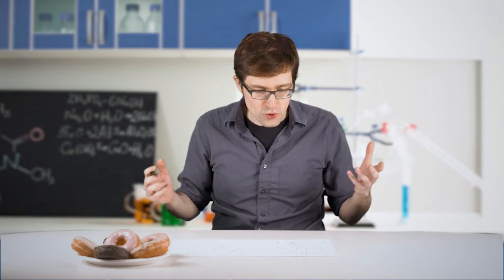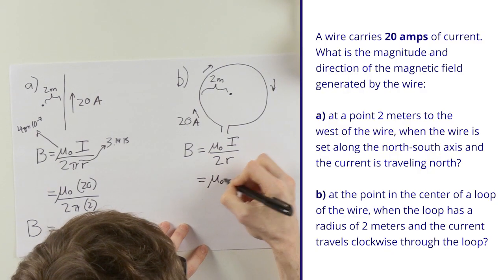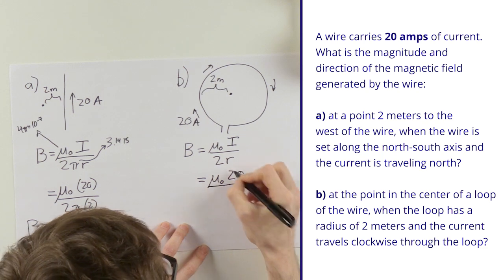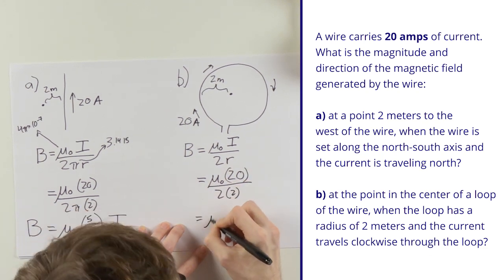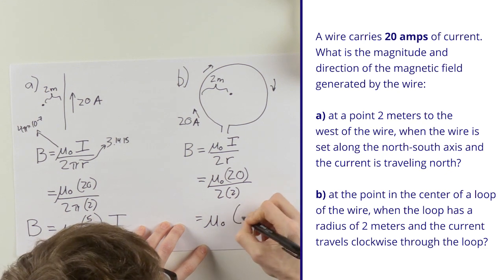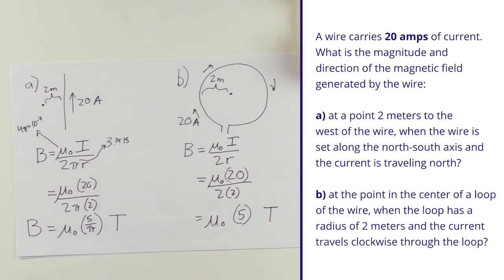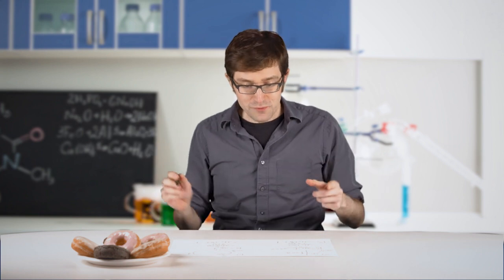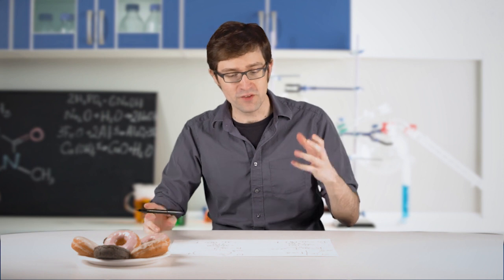Over here on the right, well the plugging in is pretty similar. 20 on top, 2 on the bottom, and this time I've got permeability of free space times just plain old 5 teslas. That gets me halfway to each of these answers. I have the magnitude but I don't have the direction yet.